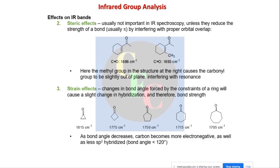Steric effects are another concern. When a methyl group is present near the C=O in conjugation, steric hindrance forces the carbonyl group slightly out of plane. Going out of plane decreases the extent of resonance, so the frequency increases compared to the unhindered conjugated case.